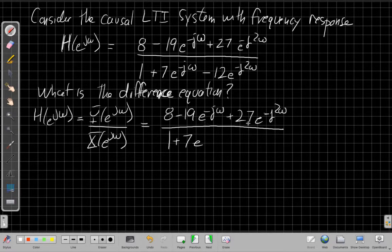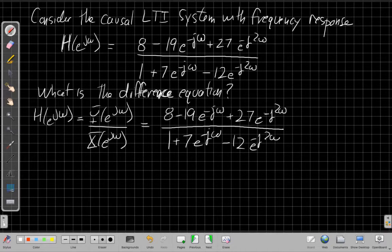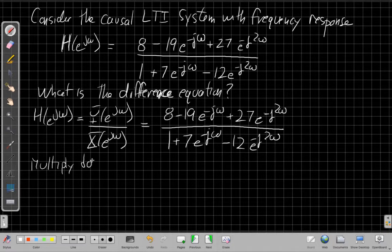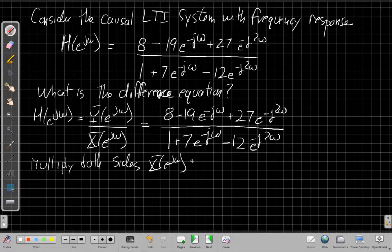So I have 8 minus 19 e to the minus j omega in the numerator, 1 minus 7 e to the minus j omega minus 12 e to the minus j 2 omega in the denominator. And so I'm trying to get back to something where I have Y with things I can use with the delay properties in X. So I'm going to multiply both sides by X of e to the j omega and whatever is in the denominator on the right-hand side.